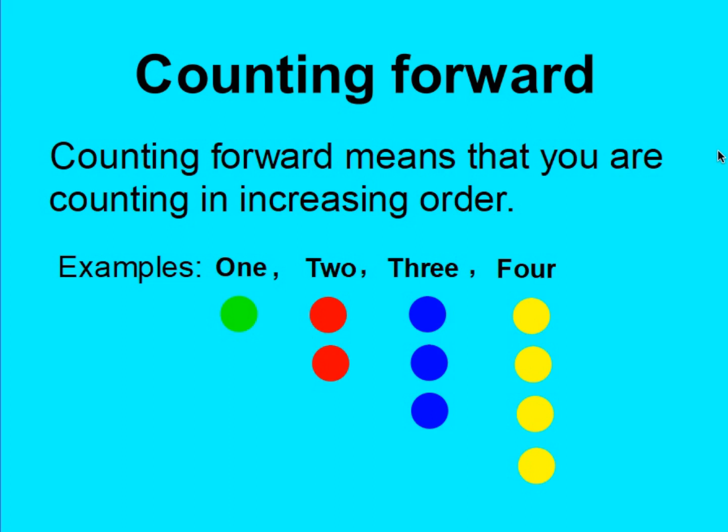Now everybody count numbers from one to ten, and let me see. Good! One, two, three, four, five, six, seven, eight, nine, ten. Very good! That is the increasing order of counting from one to ten.